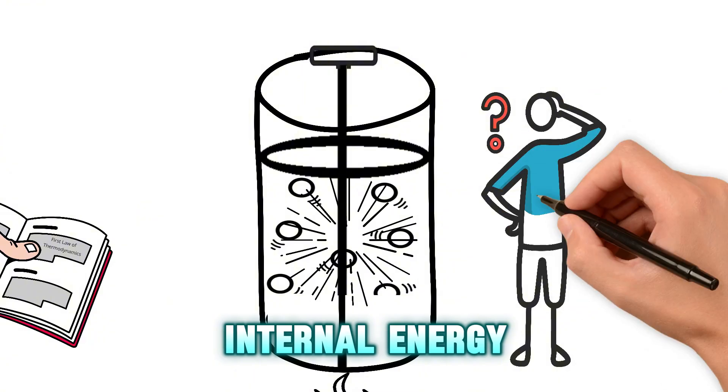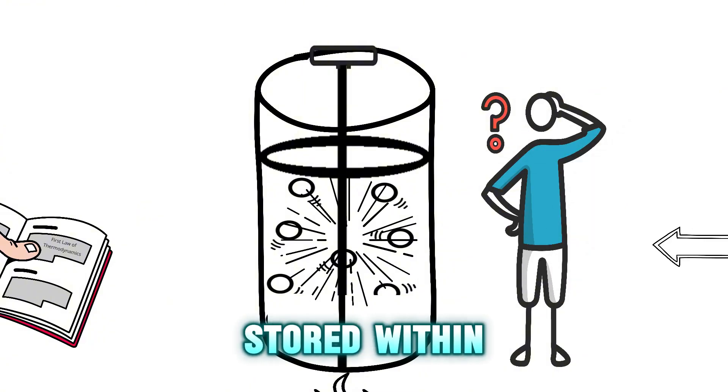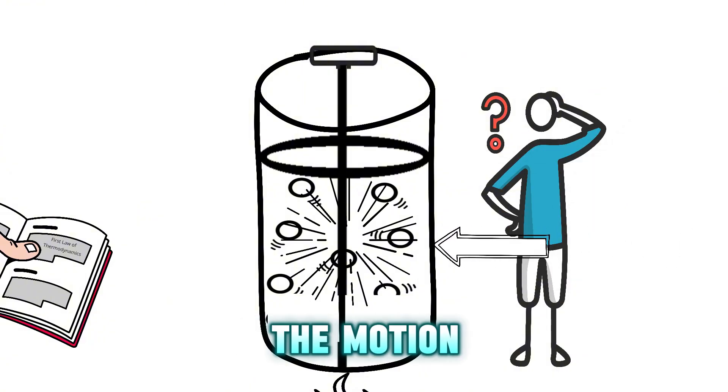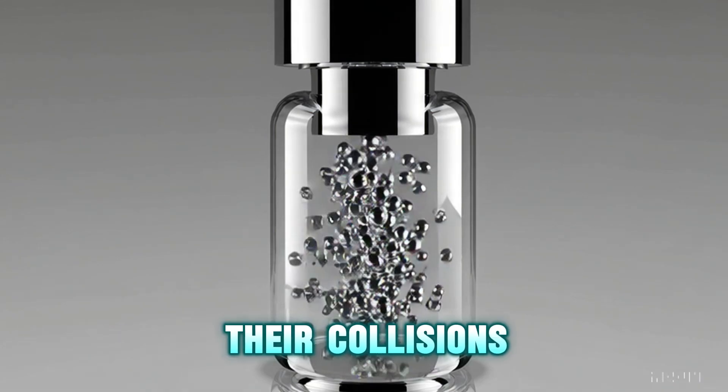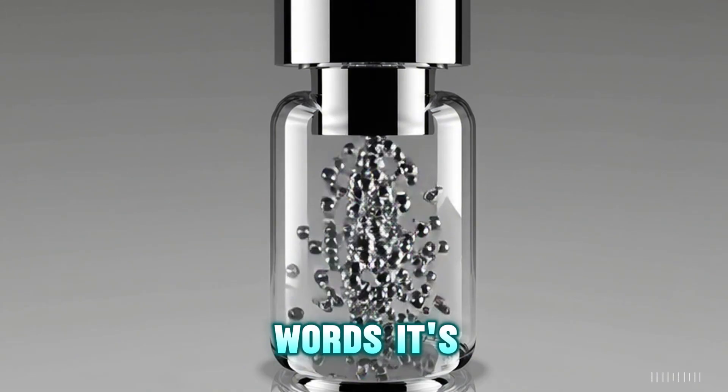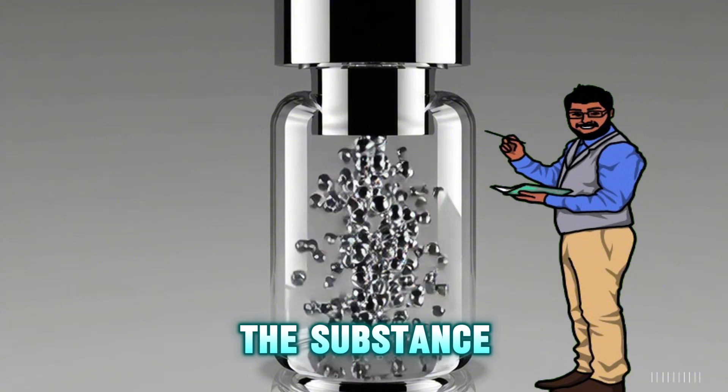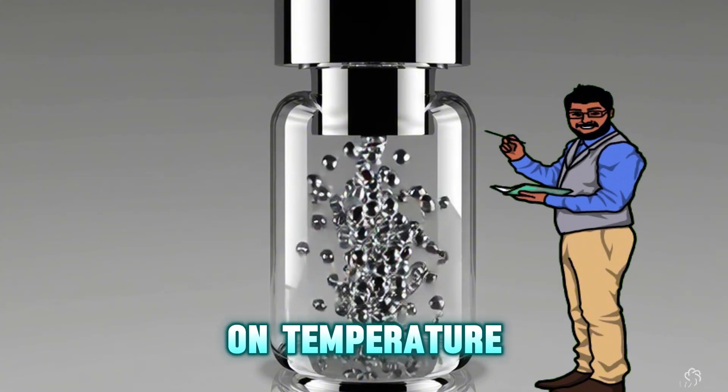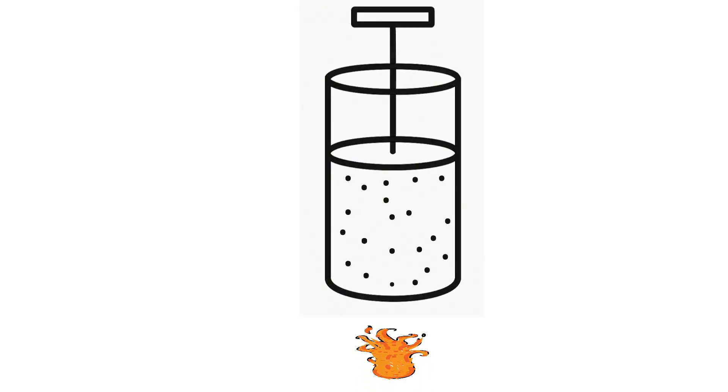Now what do we mean by internal energy? It's the total energy stored within the gas: the motion of its particles, their collisions and vibrations. In other words, it's the hidden energy inside the substance, and it depends mainly on temperature.